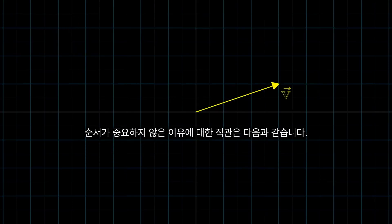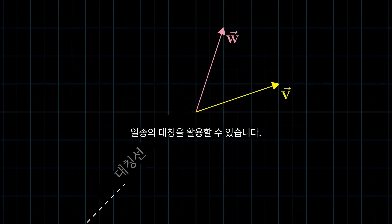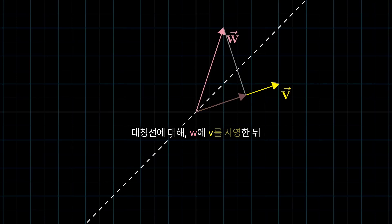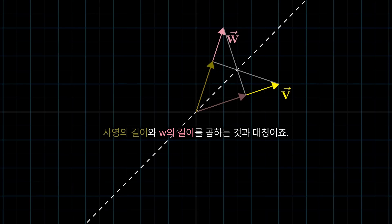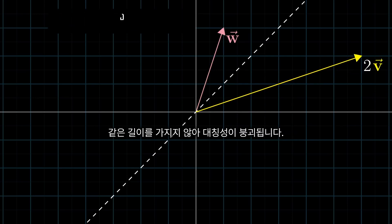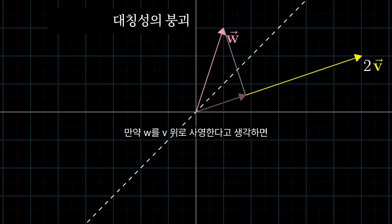Here's the intuition for why order doesn't matter. If v and w happened to have the same length, we could leverage some symmetry. Since projecting w onto v, then multiplying the length of that projection by the length of v, is a complete mirror image of projecting v onto w, then multiplying the length of that projection by the length of w. Now if you scale one of them, say v, by some constant like 2, so that they don't have equal length, the symmetry is broken. But let's think through how to interpret the dot product between this new vector, 2v, and w. If you think of w as getting projected onto v, then the dot product 2v·w will be exactly twice the dot product v·w.